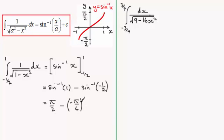So, pi upon 2 minus minus pi upon 6 gives you 4 pi upon 6. And that reduces down, if you cancel top and bottom by 2 to 2 pi over 3. And there's your answer.